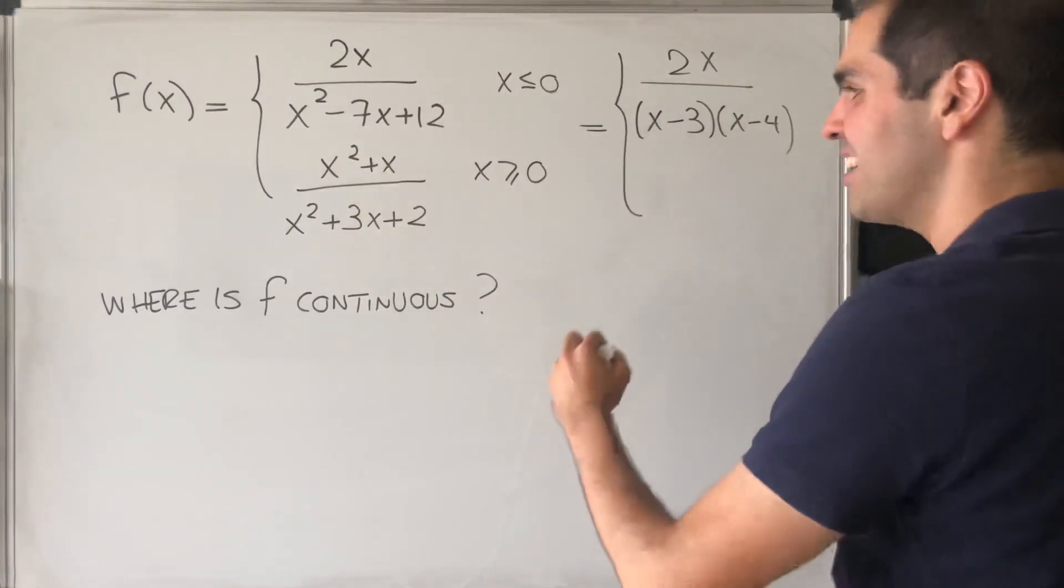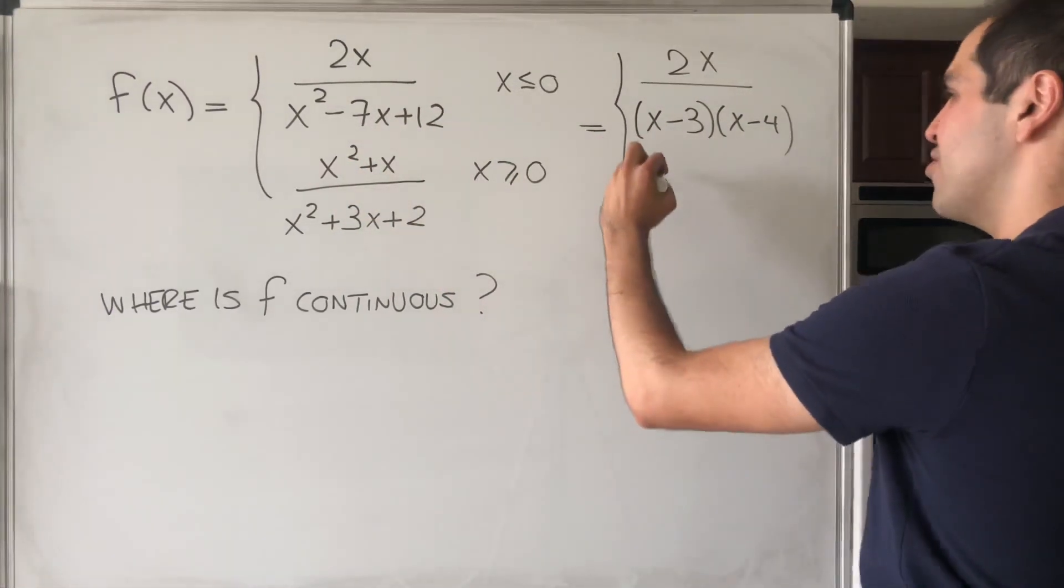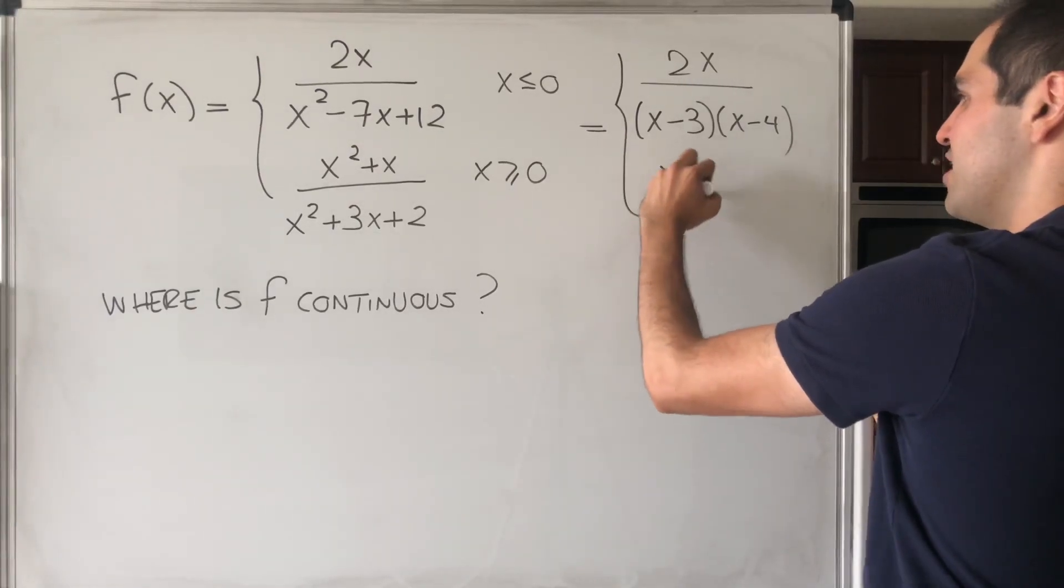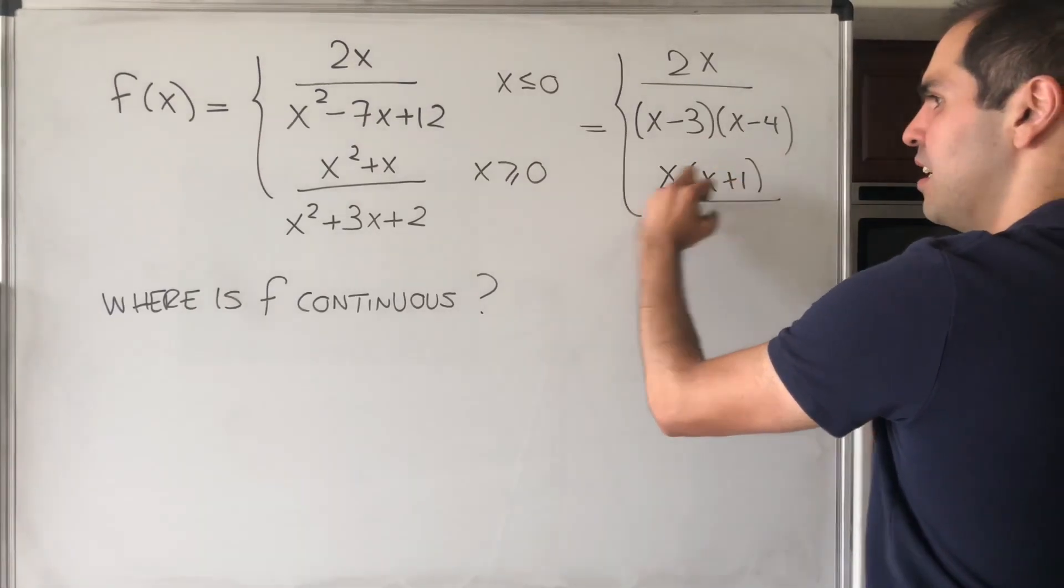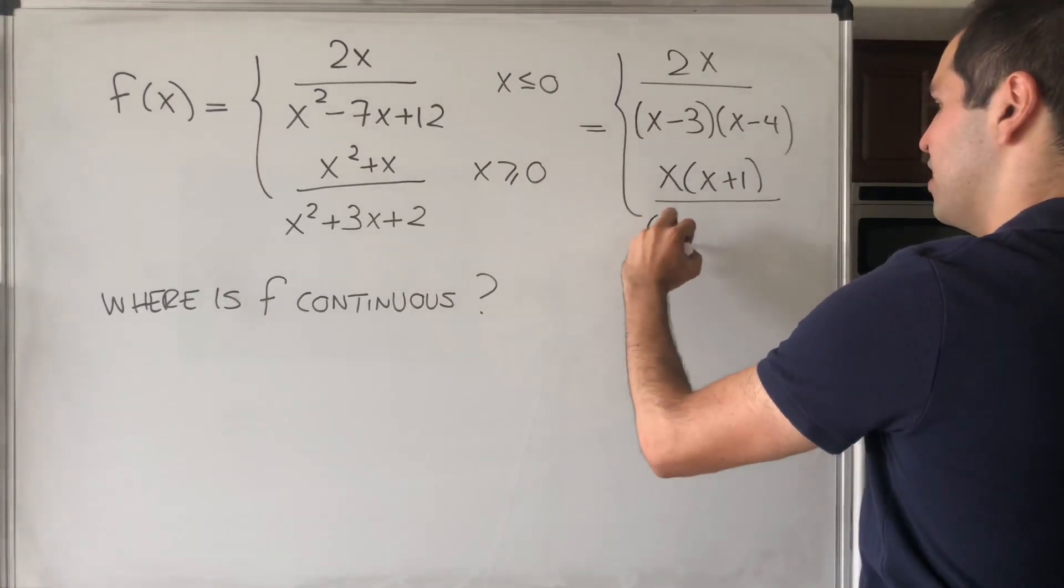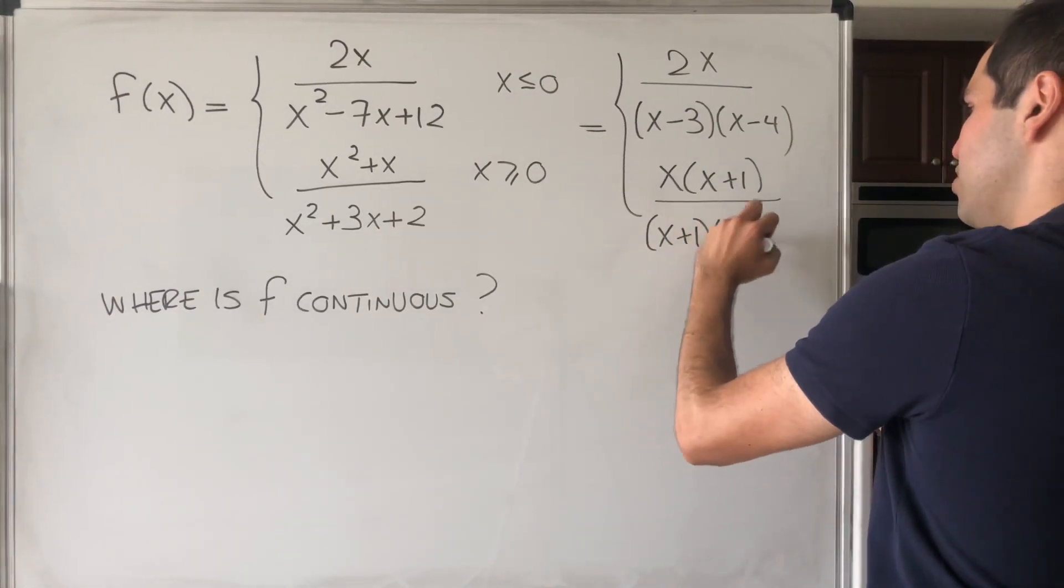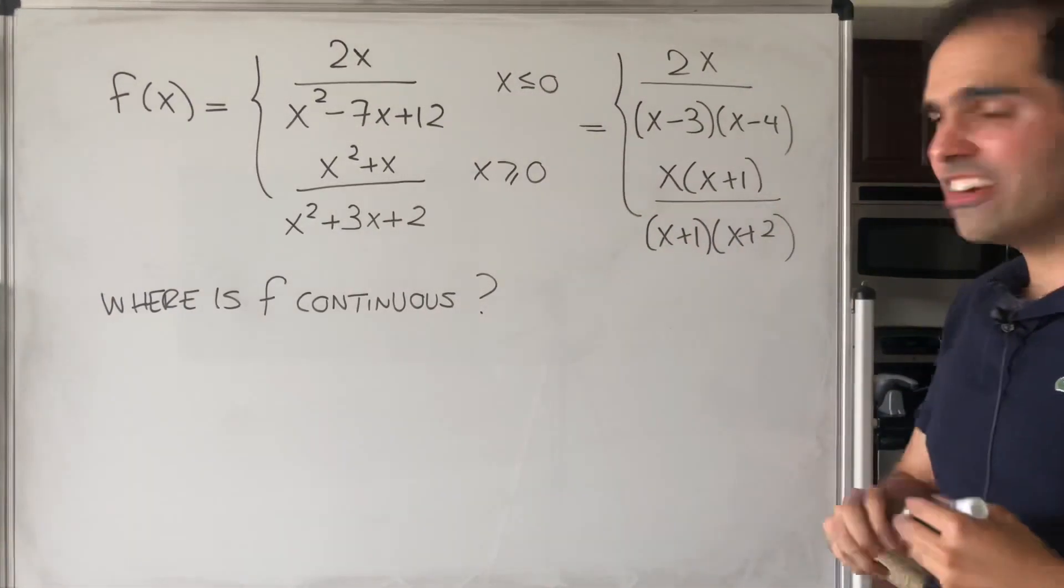And a function x squared plus x over x squared plus 3x plus 2, which is x times x plus 1 over x plus 1 times x plus 2, when x is greater or equal to 0.